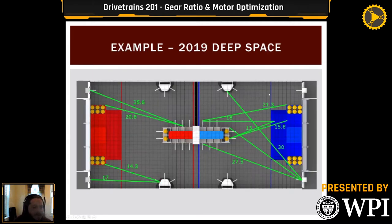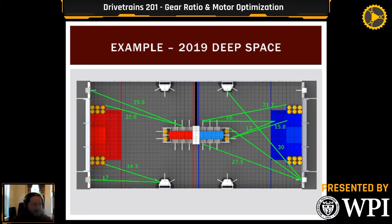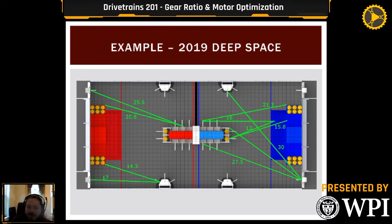Here's an example from our team's Slack from January 7th last year as we were looking at different sprint distances for 2019 Deep Space. A lot of these different options fall in a similar range with only a couple feet of variability. Ultimately we picked 17 feet — between the loading station and the rocket — because we decided to be a rocket bot. Keep in mind all these numbers are raw distances; you'll need to subtract the length of your robot and deceleration time unless you want to go face-first into scoring objects.